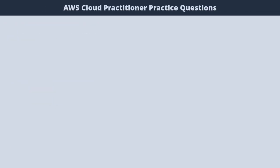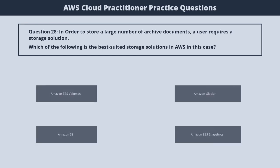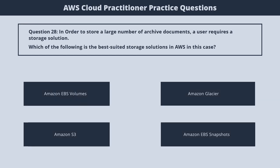Question 28. In order to store a large number of archived documents, a user requires a storage solution. Which of the following is the best suited storage solution in AWS? 1. Amazon EBS Volumes. 2. Amazon Glacier. 3. Amazon S3. 4. Amazon EBS Snapshots. The correct answer is 2. Amazon Glacier.